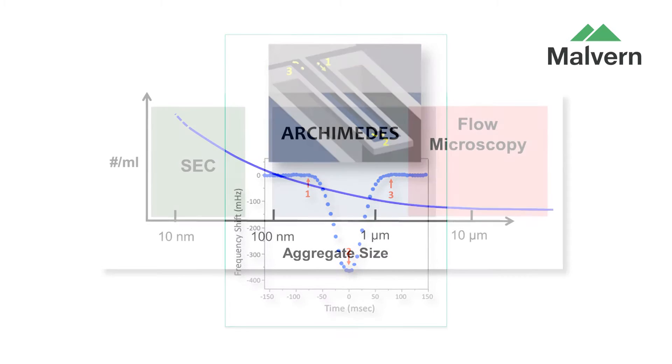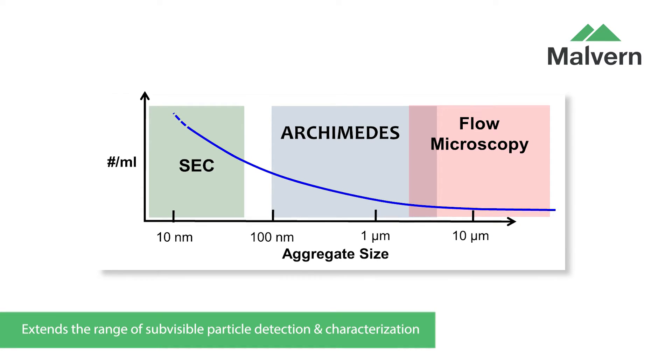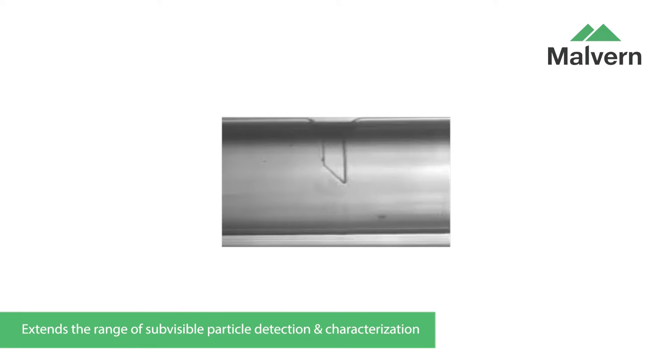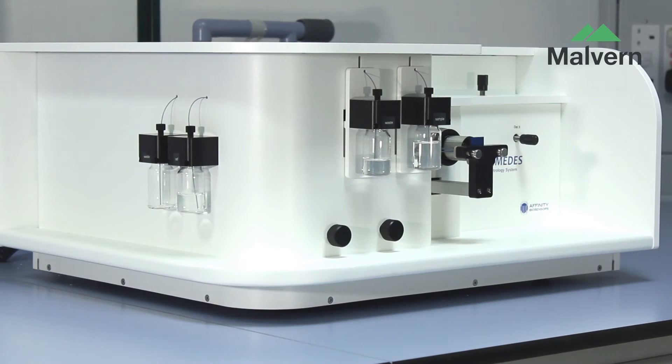Archimedes extends the range of quantitative and qualitative sub-visible particle measurement to include smaller sizes it's previously been difficult to analyze using other techniques. The technology it uses is called resonant mass measurement and it's able to give accurate and repeatable measurements of aggregate diameter, mass, and concentration.